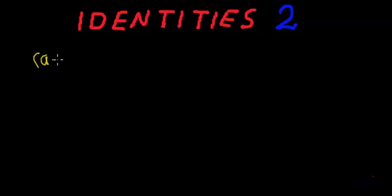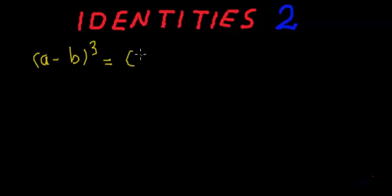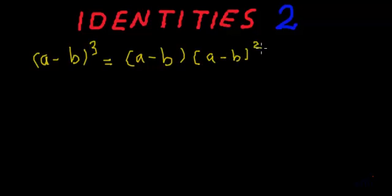Now let's derive the identity for a minus b whole cube. This a minus b whole cube can be written as a minus b multiplied by a minus b whole square.